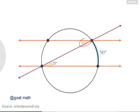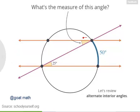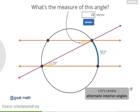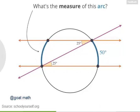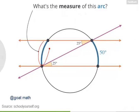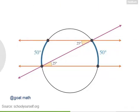Next, take a look at this angle up here. Remember, these two lines are parallel, so these two angles are alternate interior angles. So this angle also measures 25 degrees. And this 25 degree angle is an inscribed angle for this arc on the left. The measure of this arc is twice the measure of this inscribed angle, so it's 50 degrees.